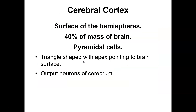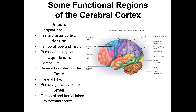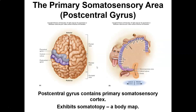The cerebral cortex surface makes up 40% of the brain's mass. Vision is the occipital lobe, hearing is the temporal lobe, equilibrium is the cerebellum, taste is the parietal lobe, and smell is the temporal and frontal lobes. The homunculus shows the primary somatosensory cortex at the postcentral gyrus — look how much brain real estate is dedicated to the tongue, teeth, cheek, hands, and feet. These areas have a big role in sensation in your brain.